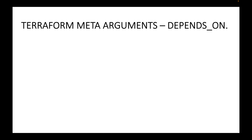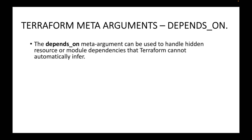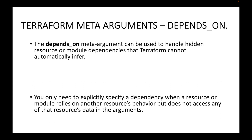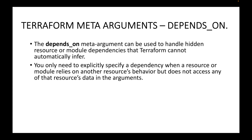However, there might be cases where there are certain hidden dependencies which Terraform cannot handle automatically, or you want to control the order in which the resources are created. That is where we can make use of the depends_on meta argument. You only need to explicitly specify a dependency when a resource or module relies on another resource's behavior.